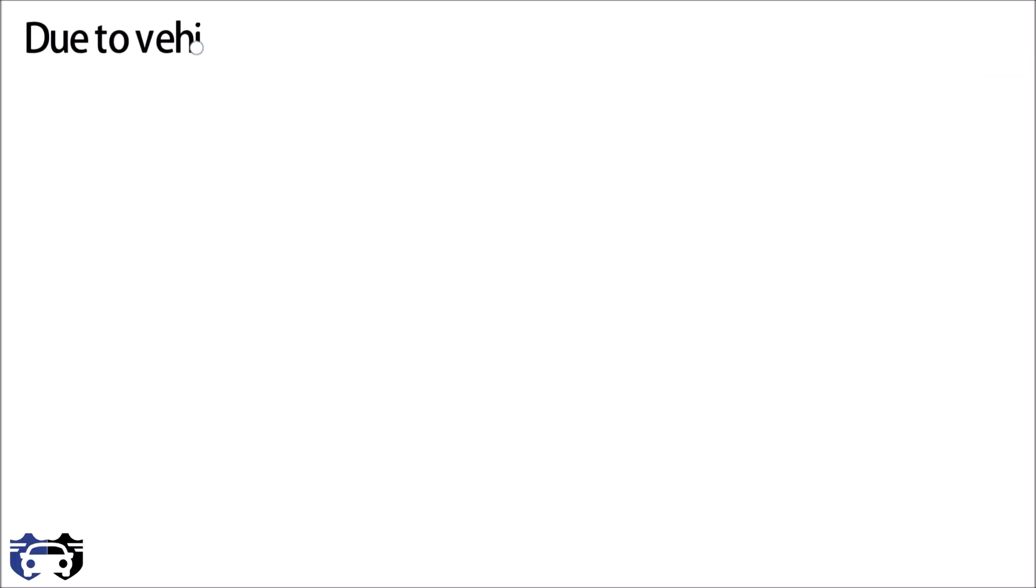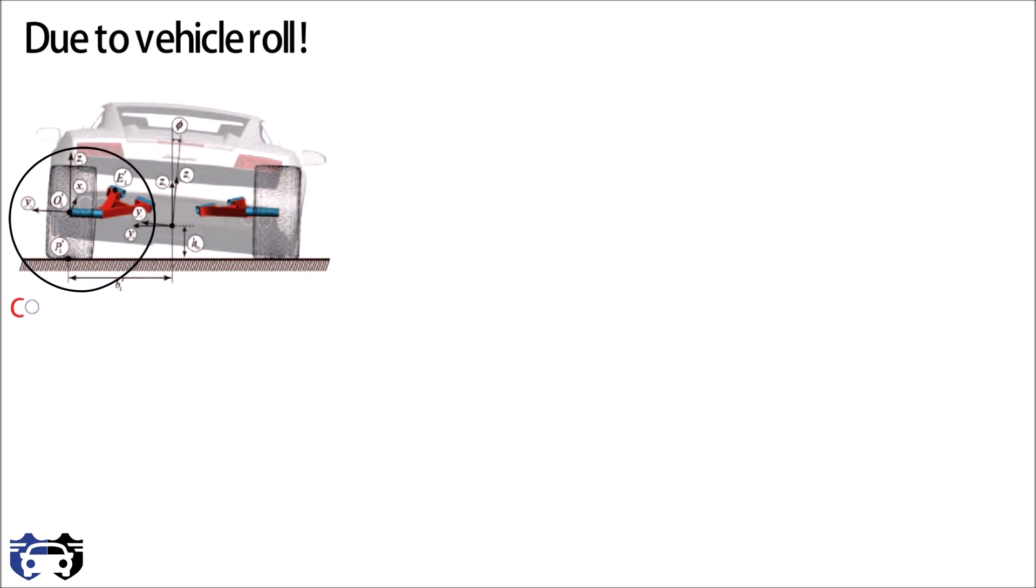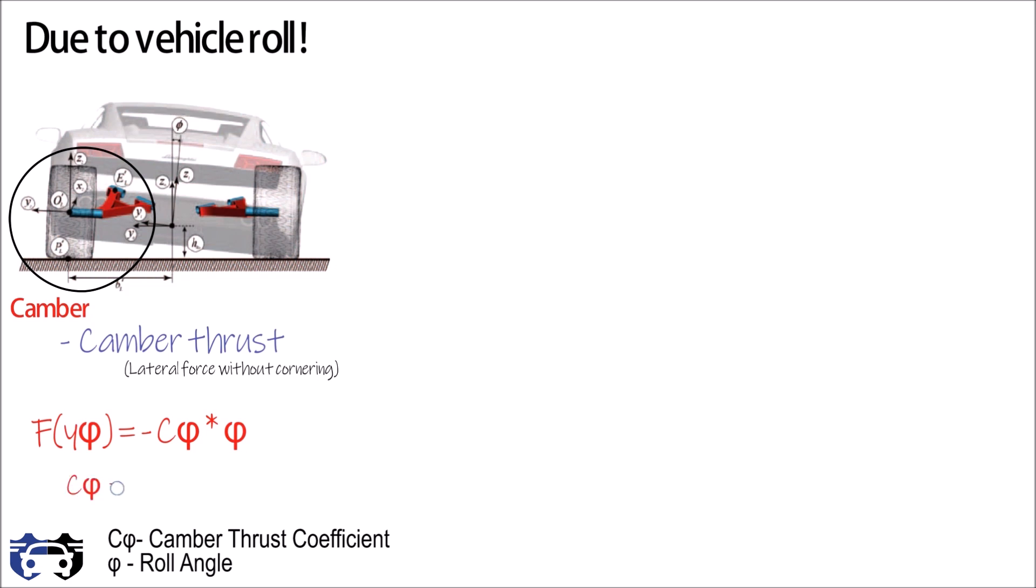Due to vehicle roll, small amount of camber is produced and this camber generates camber thrust, which is the type of lateral force. Camber thrust is given by Fy(phi) equals minus C_phi multiply by phi, where C_phi is the tire camber thrust coefficient. It is given by the slope of curve between lateral force at time of roll and the roll angle.